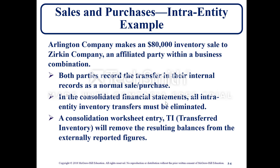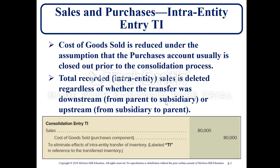In the consolidated financial statements, all intra-entity inventory transfers must be eliminated. A consolidated worksheet entry TI — the acronym TI is used for transferred inventory — will remove the resulting balances from the external reported figures. For entry TI, cost of goods sold is reduced under the assumption that the purchase account is closed out prior to the consolidation process. Total recorded intra-entity sales is deleted regardless of whether the transfer was downstream from a parent to a subsidiary or upstream from subsidiary to a parent. The consolidation entry TI is a debit to sales and a credit to cost of goods sold, eliminating the effect of an intra-entity transfer of inventory.